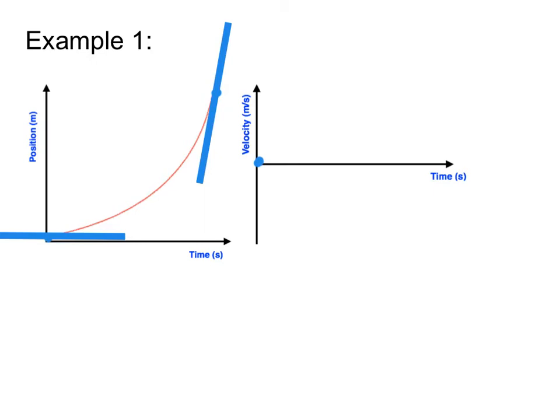That's my tangent line for the last point in time. Let's describe this tangent line: what kind of slope does it have? Well, first it's positive, and it's very steep. The way you want to think about this is: do I draw it above the time axis or below? Since it's a positive slope, we're going to draw it above. And since it's very steep, I want to draw it further away from the time axis. So I'm going to draw my velocity versus time graph connecting these points.